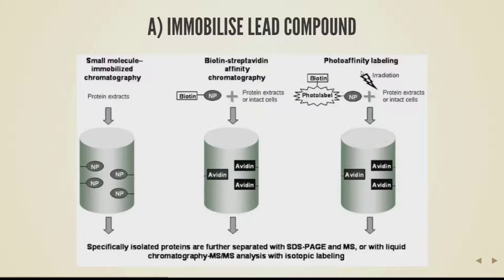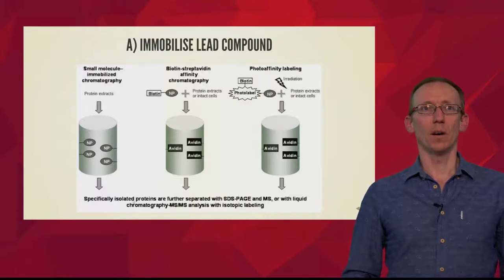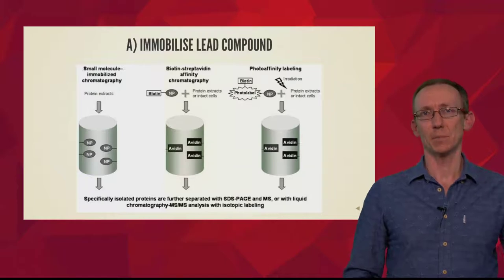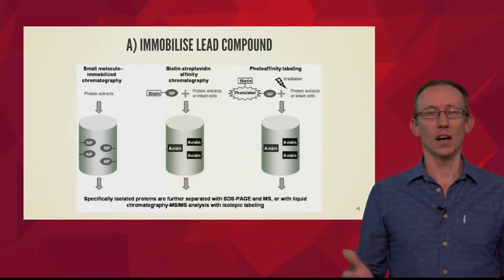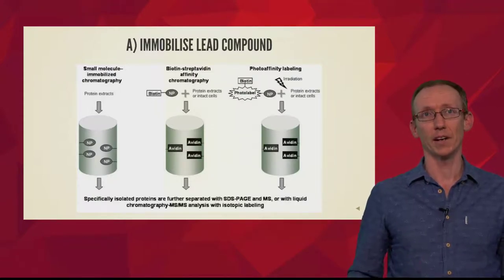Finally there is photo affinity labelling. We take a complex construct with the natural product or drug lead, a photo affinity label, and biotin all attached. We pass this through a column with avidin — the biotin binds to the avidin — then flush through the protein extracts or intact cells. We irradiate with UV light, which leads to a covalent bond forming between the photo label and the target proteins, so there's no dissociation. We flush the column to break the biotin-avidin association, and then use techniques like SDS-PAGE, mass spectrometry, liquid chromatography-mass spectrometry, and isotopic labelling to identify the protein target.